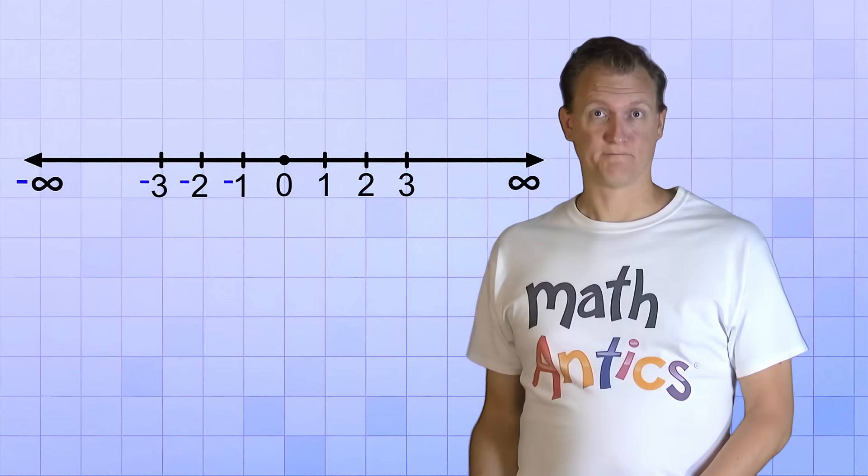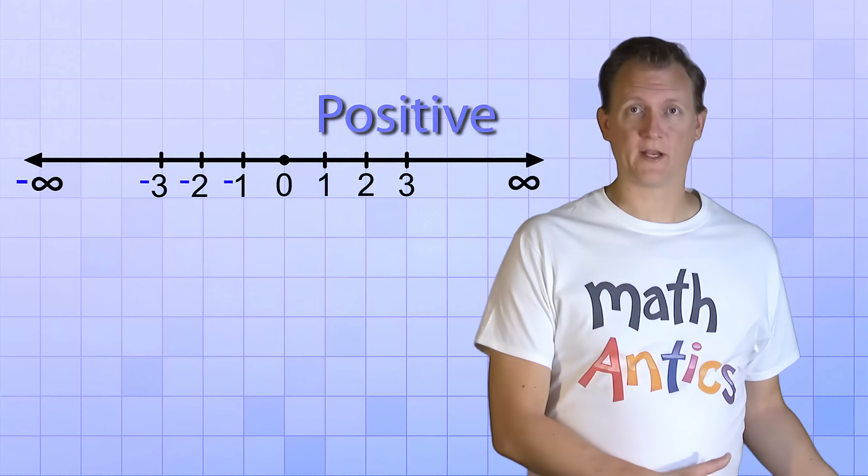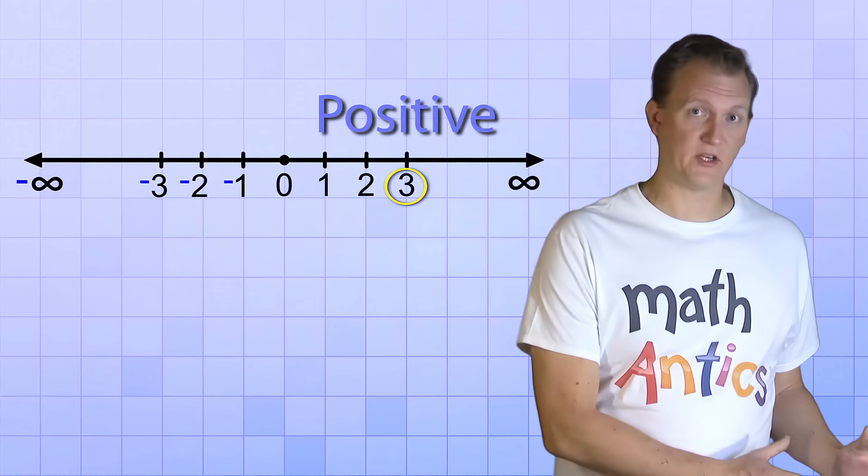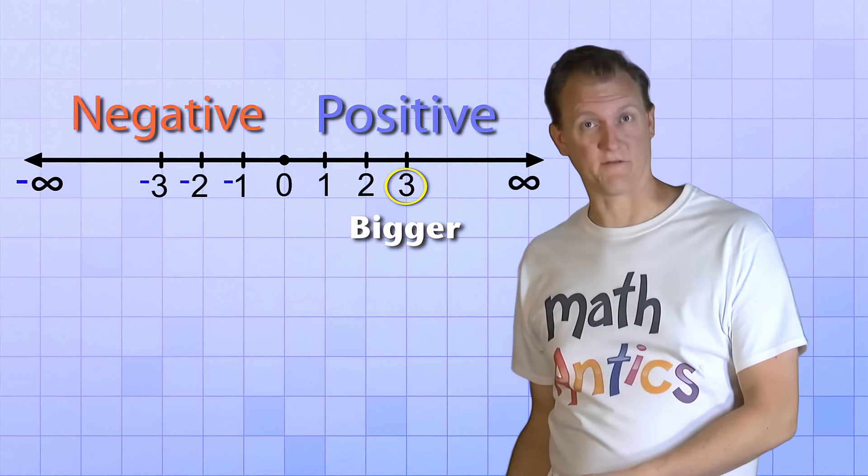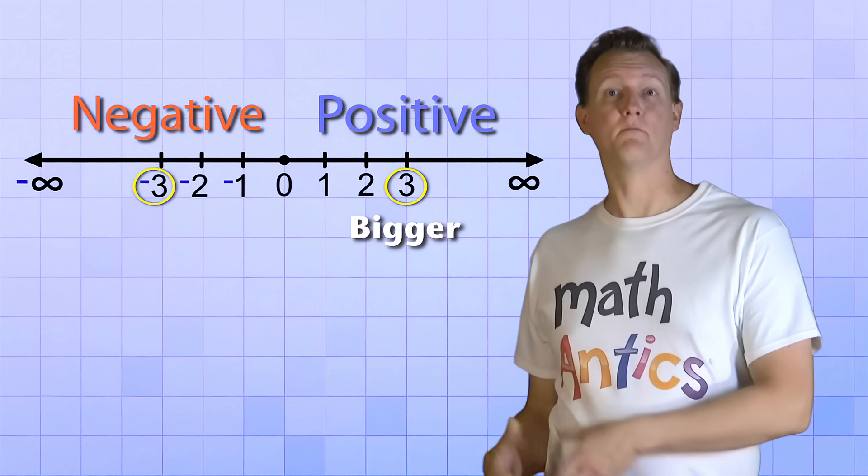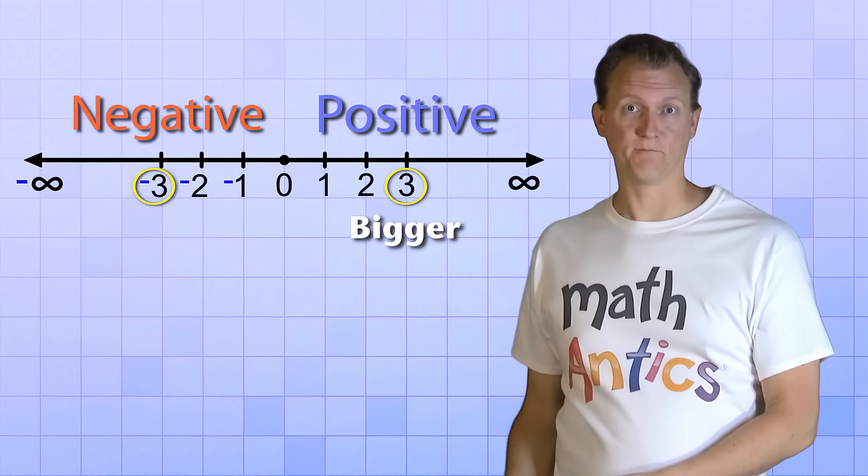I like to think of it like this. On the positive side of the number line, 3 is more positive than 2, so it's bigger. But on the negative side of the number line, negative 3 is more negative than negative 2, so it's smaller.